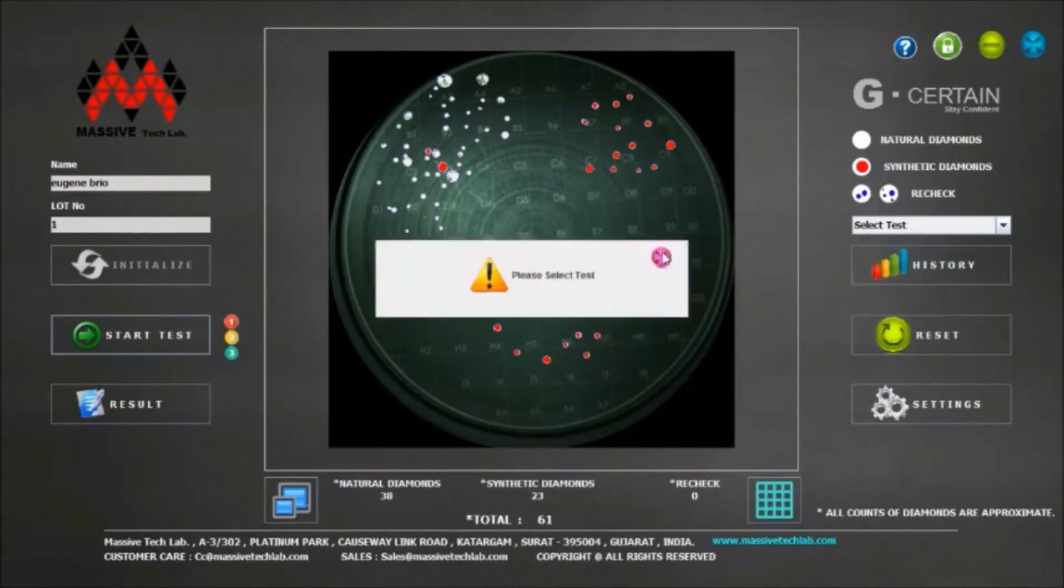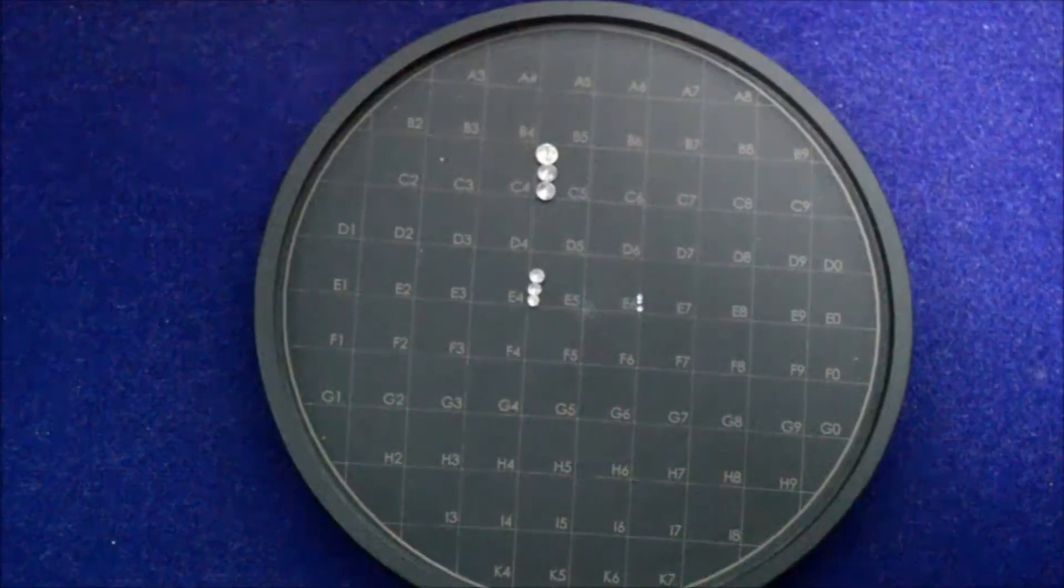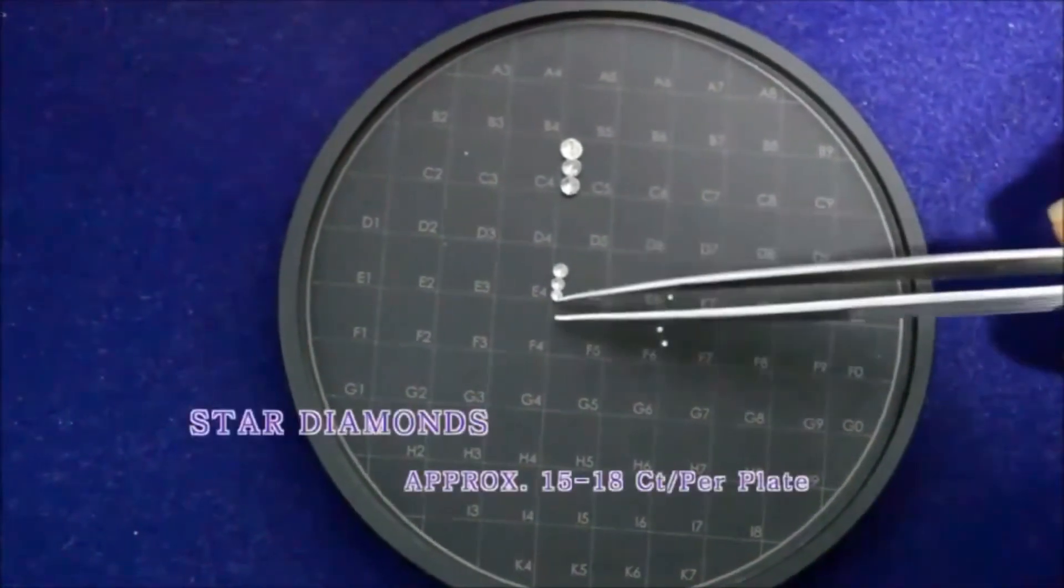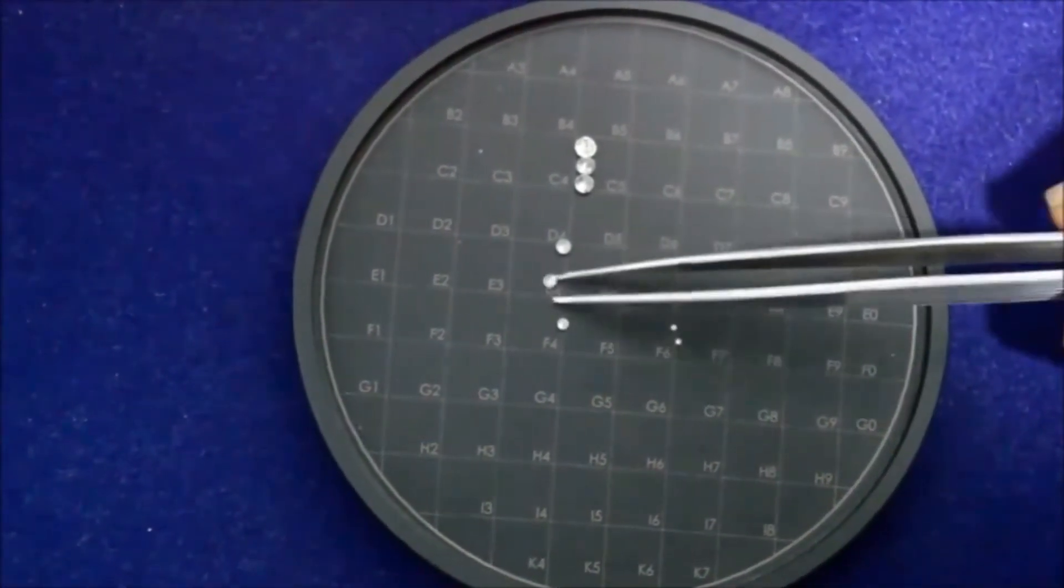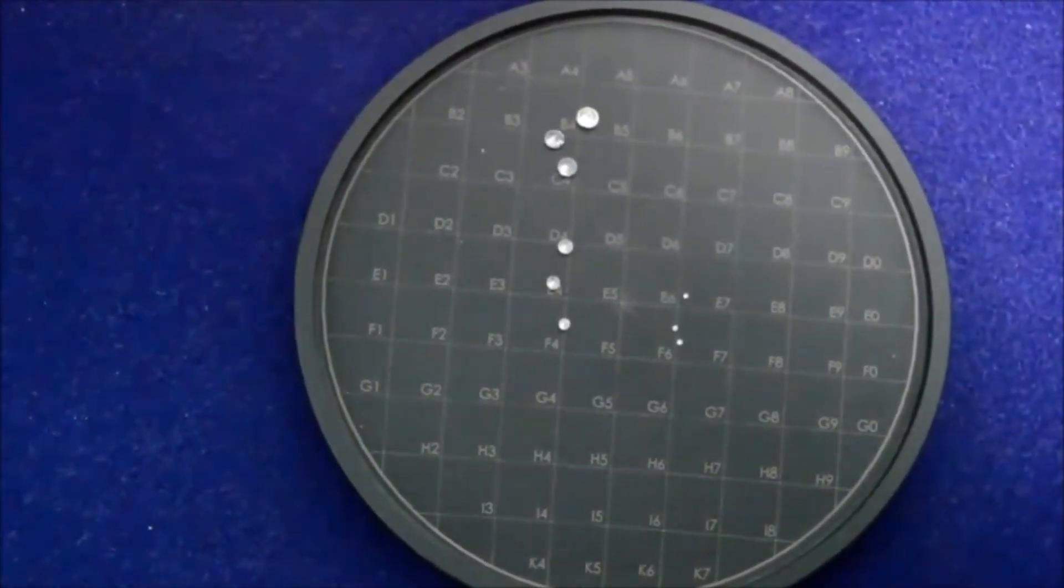We can use reset button to reset testing between and reset test parameters. G Certain is capable of loading diamonds 7 to 8 carat of 1 millimeter size, 5 to 18 carat of star size, and 30 to 35 carats of melee size. This is G Certain.